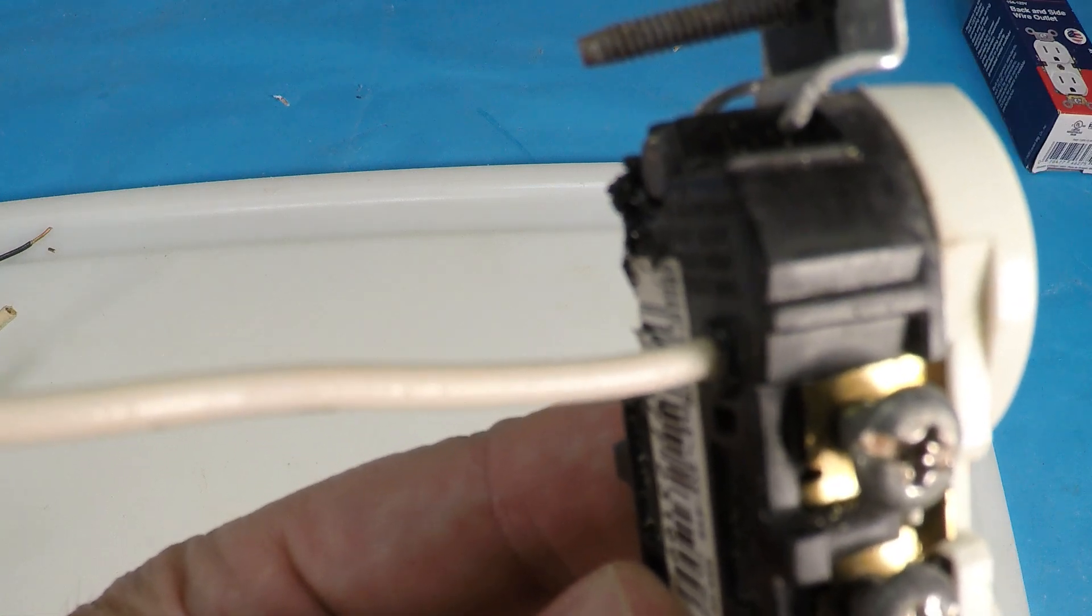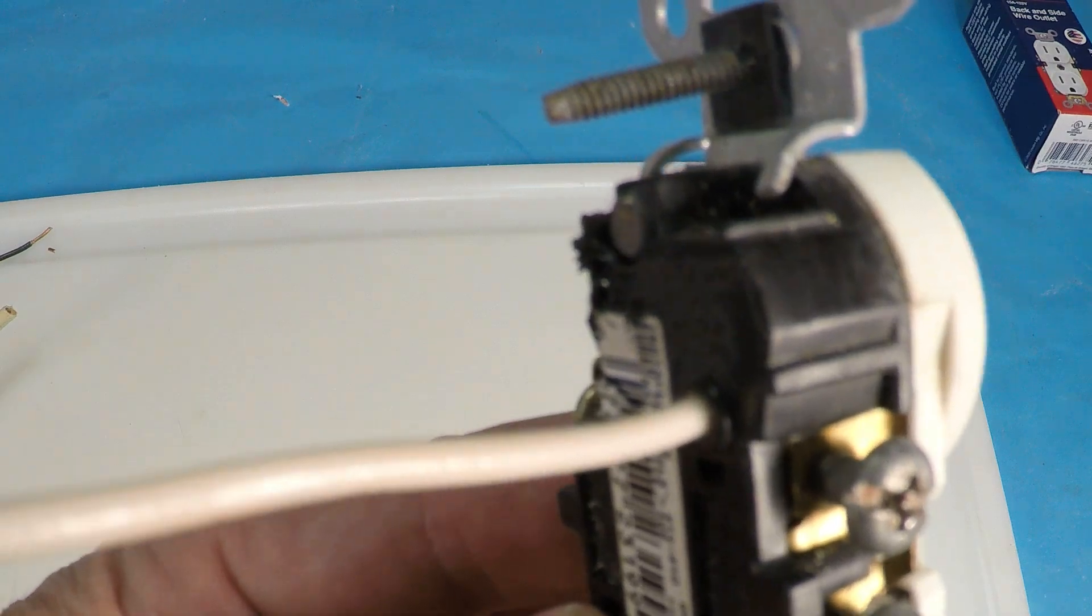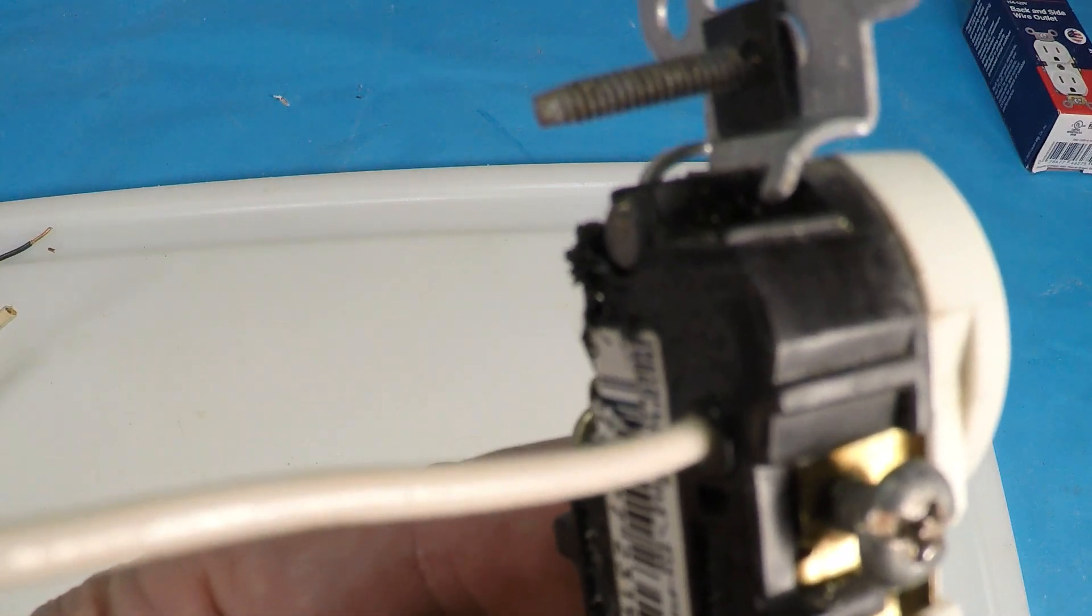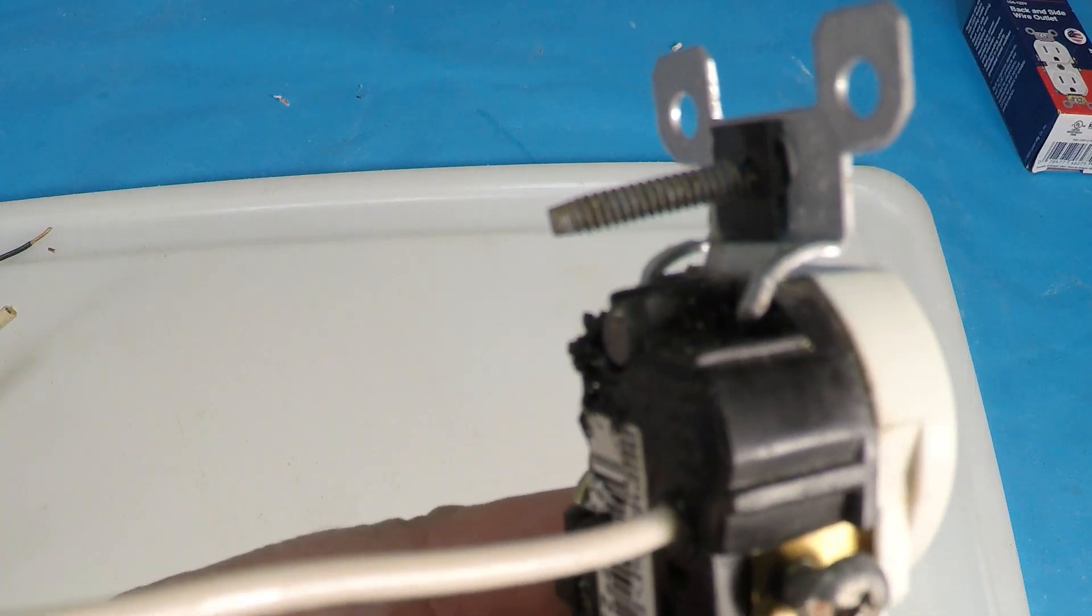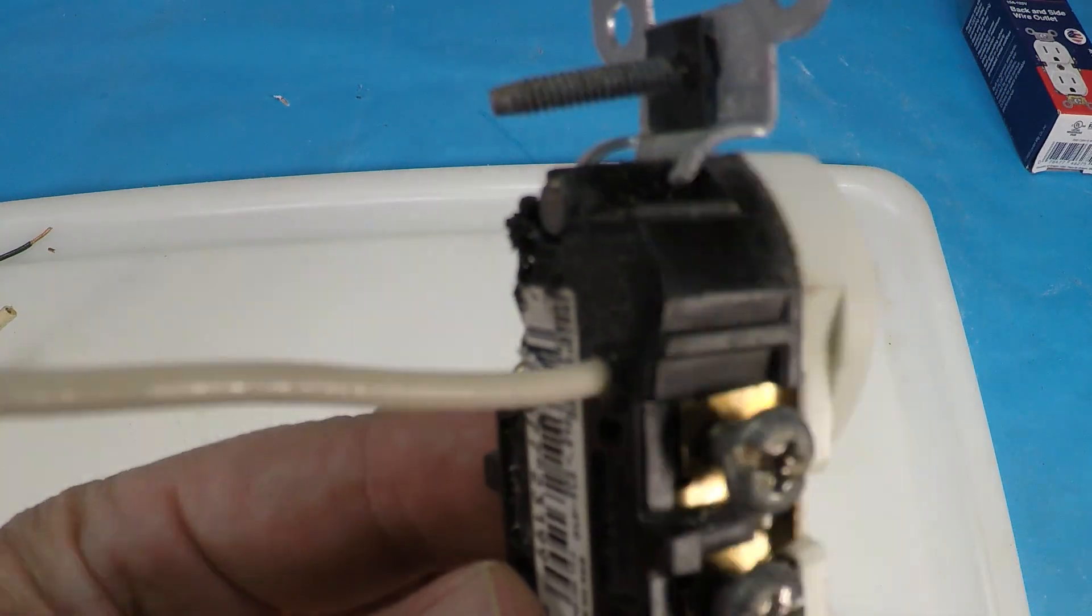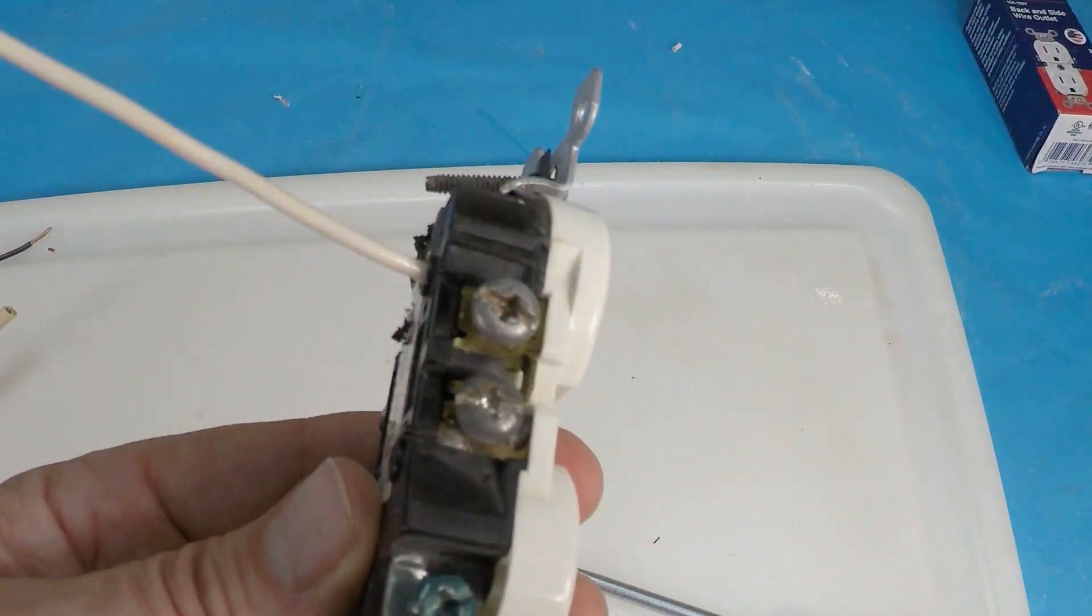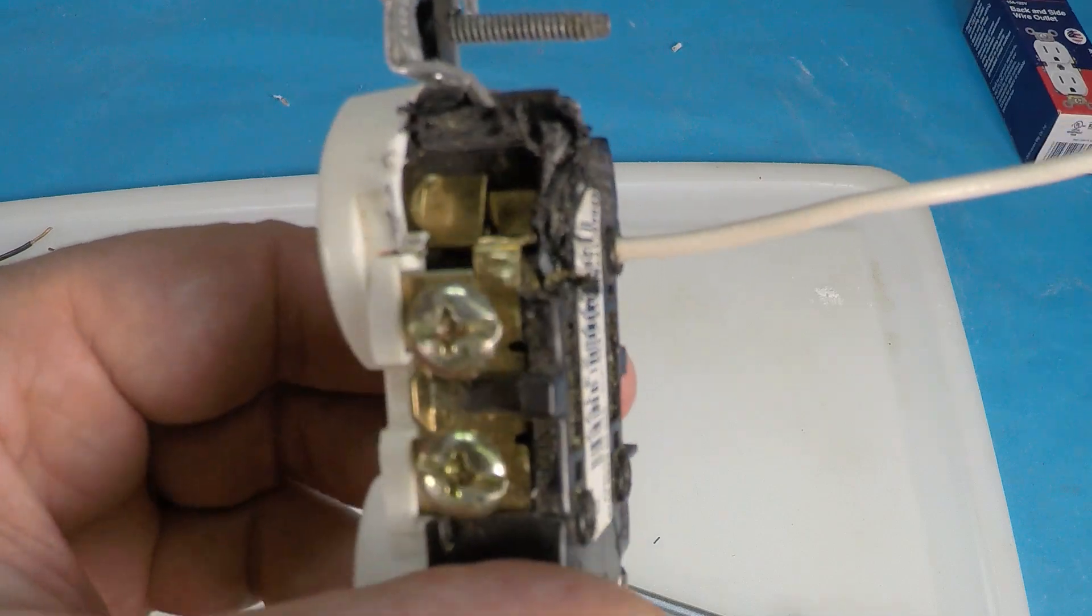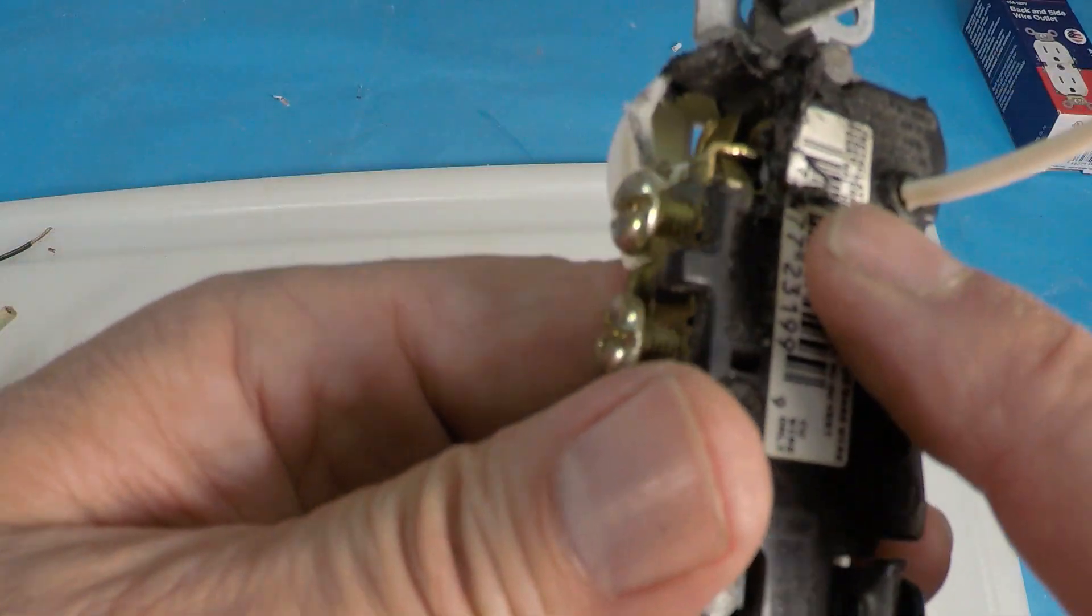Backstabbing should not be anything that you entertain and if you pull out one of your outlets and it's backstabbed, immediately rewire it. The companies are making these outlets for convenience. It's laziness and laziness is going to potentially burn your house down or worse. Now I cut open this outlet on this side so you can see what's going on when you backstab it.